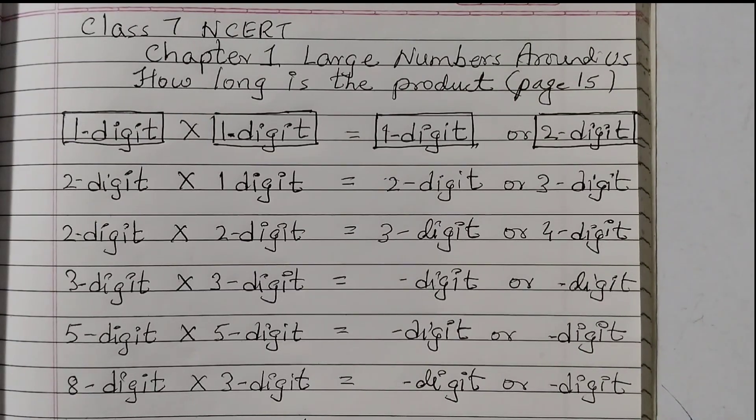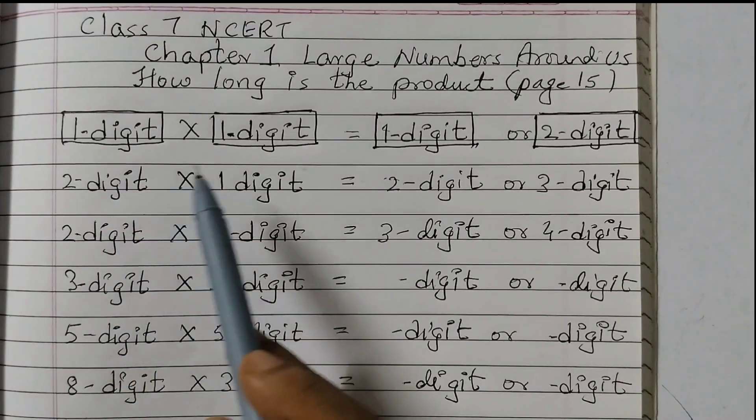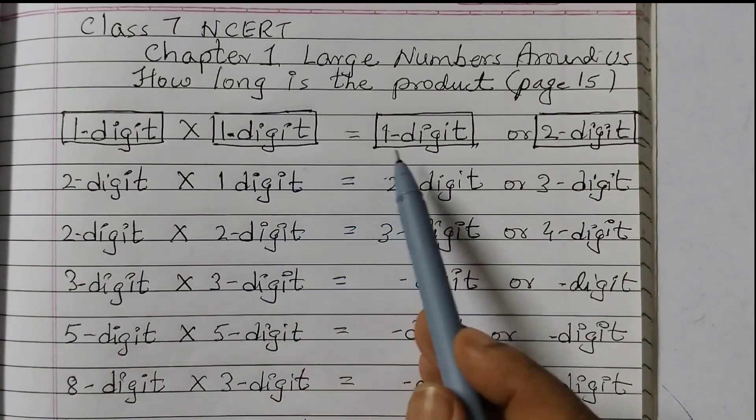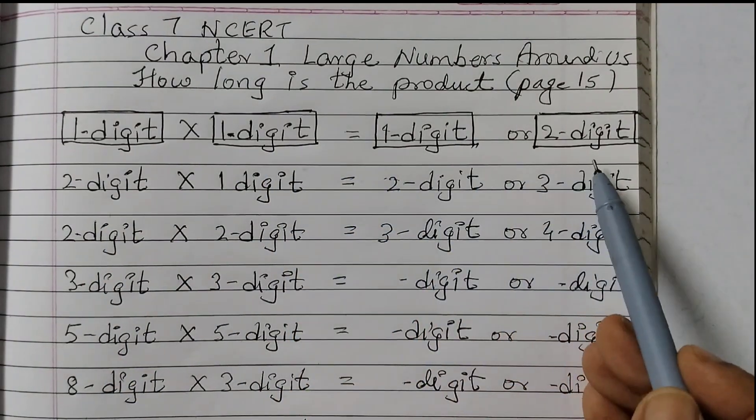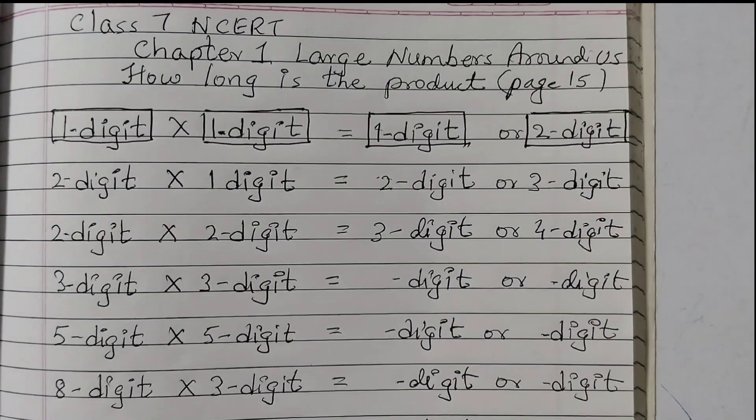Observe the multiplication statements below. Do you notice any patterns? See if this pattern extends for other numbers as well. So what is the pattern given here? 1 digit into 1 digit is equal to 1 digit or 2 digit. What does this mean?